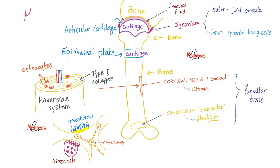The marrow is in the core of the bone. The word for core in medicine is myelo — myelo means the core. That's why we have a disease known as osteomyelitis: osteo means bone, myelo means marrow, and itis is inflammation. So osteomyelitis is inflammation of the bone and the bone marrow, which is in the core of the bone.